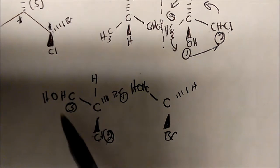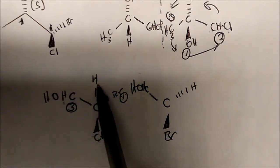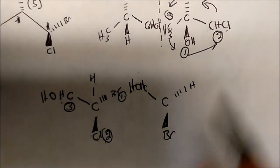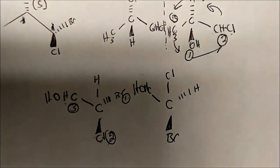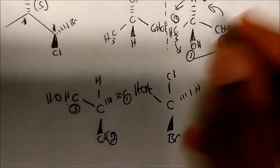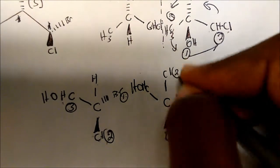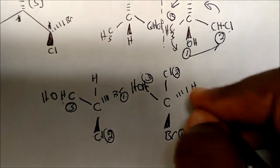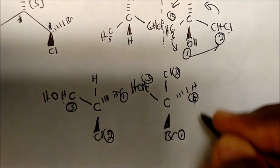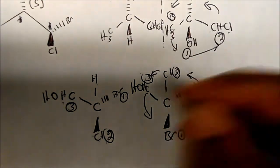So the chlorine ends up here — it cannot take the constant group's spot. Assigning priorities: bromine gets one, chlorine gets two, the CHOH group gets three, hydrogen gets four as always. Drawing the arrow from one to two to three, it's going this way — so this center is also S.